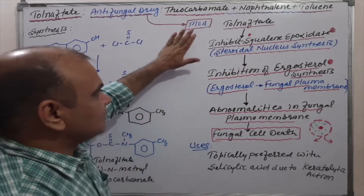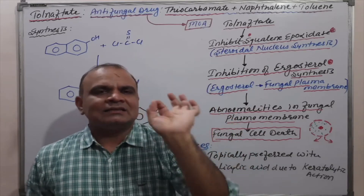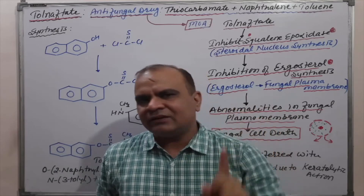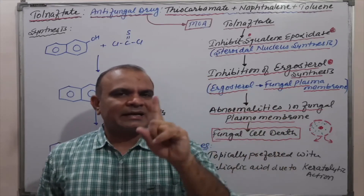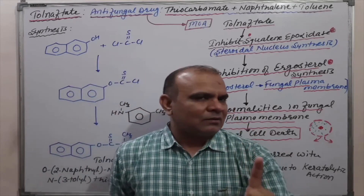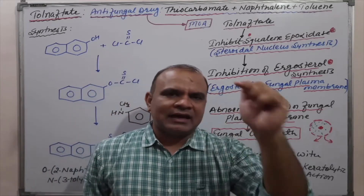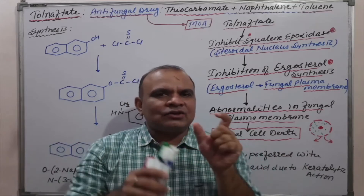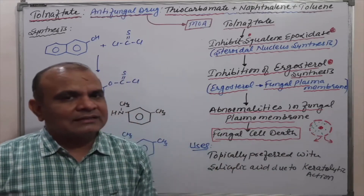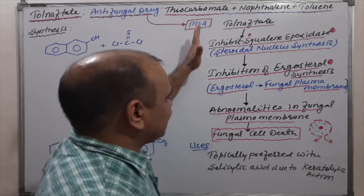Just by inhibiting squalene epoxidase — the key enzyme responsible for steroidal nucleus synthesis — ergosterol production is blocked. Ergosterol is the main component of the fungal cell membrane, and the fungal cell cannot survive without ergosterol. If ergosterol is absent, cell death is definite. This is the mechanism of action.